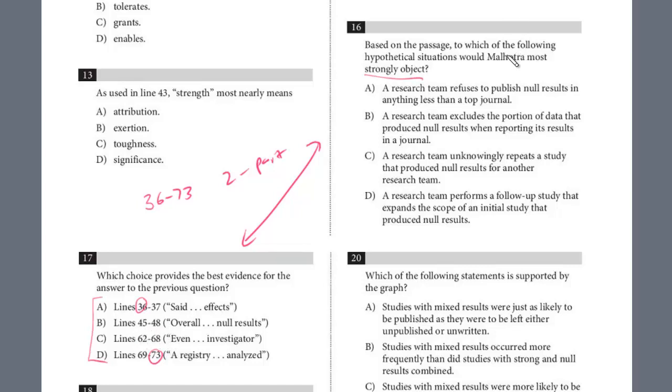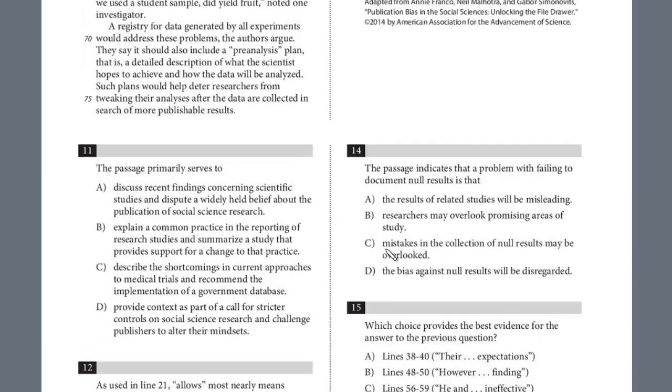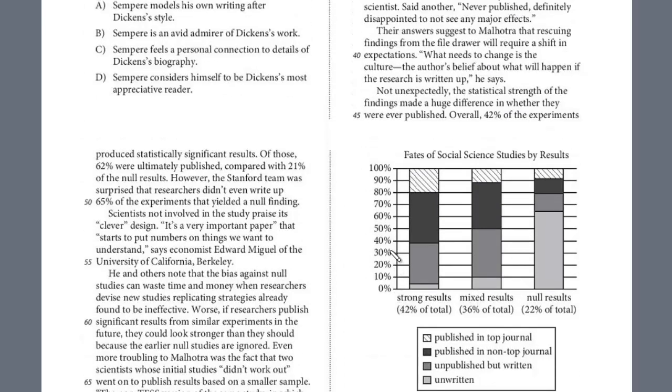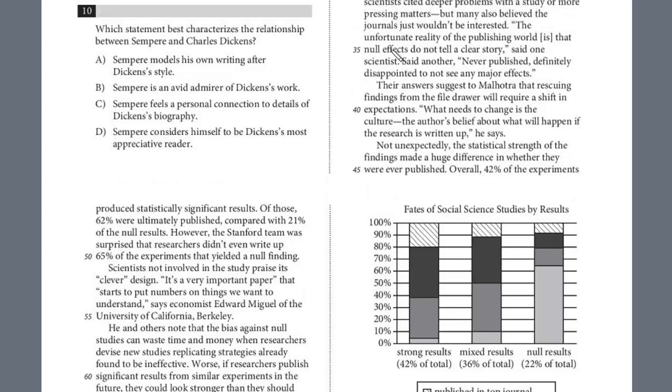And you're saying to yourself, we want evidence to Malhotra objecting. And so I think that it just helps. And then you can answer number 16 in the first part of the two-part question. So we want evidence of Malhotra objecting. And so let's see, it started at 36.